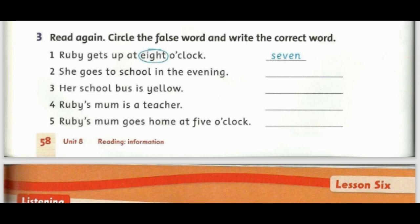Circle the false word and write the correct word. Ruby gets up at 8 o'clock. She goes to school in the evening. Her school bus is yellow. Ruby's mum is a teacher. Ruby's mum goes home at 5 o'clock.